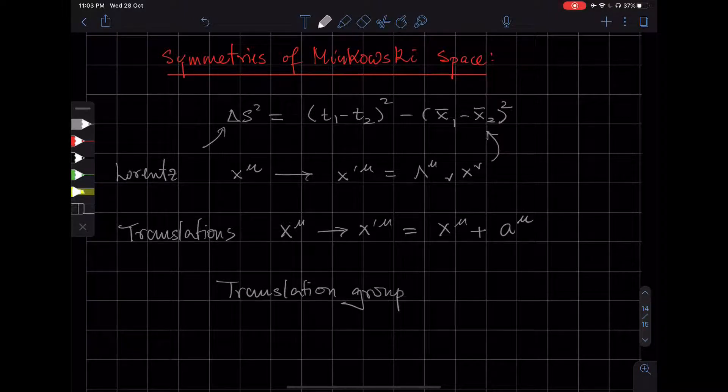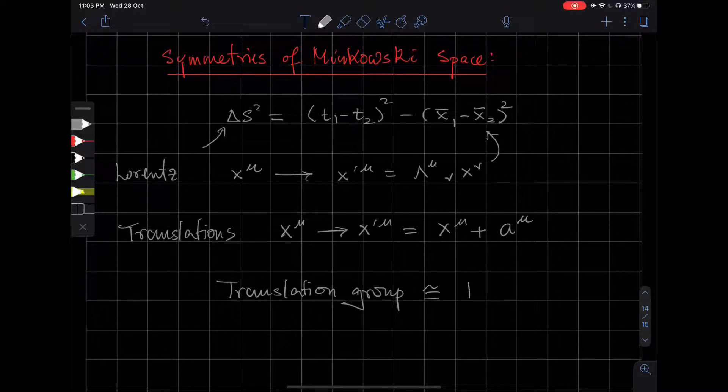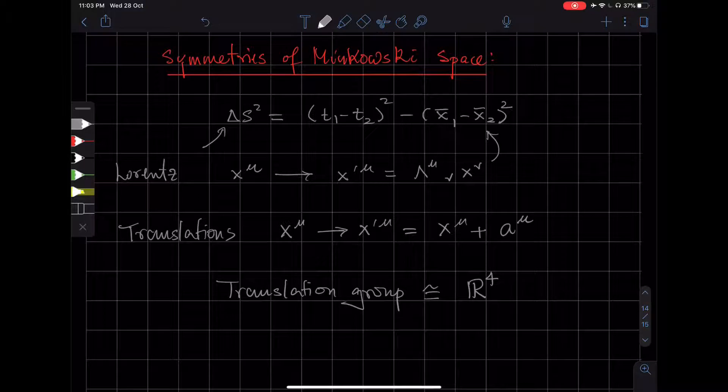And the translation group is isomorphic to the group of additions R4, so four copies of the real line. This is an Abelian group.